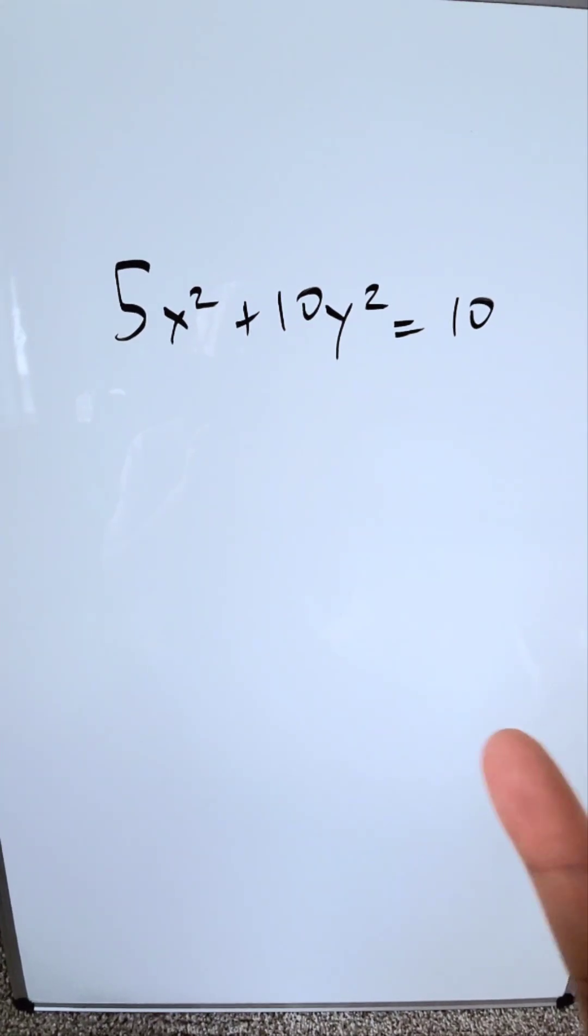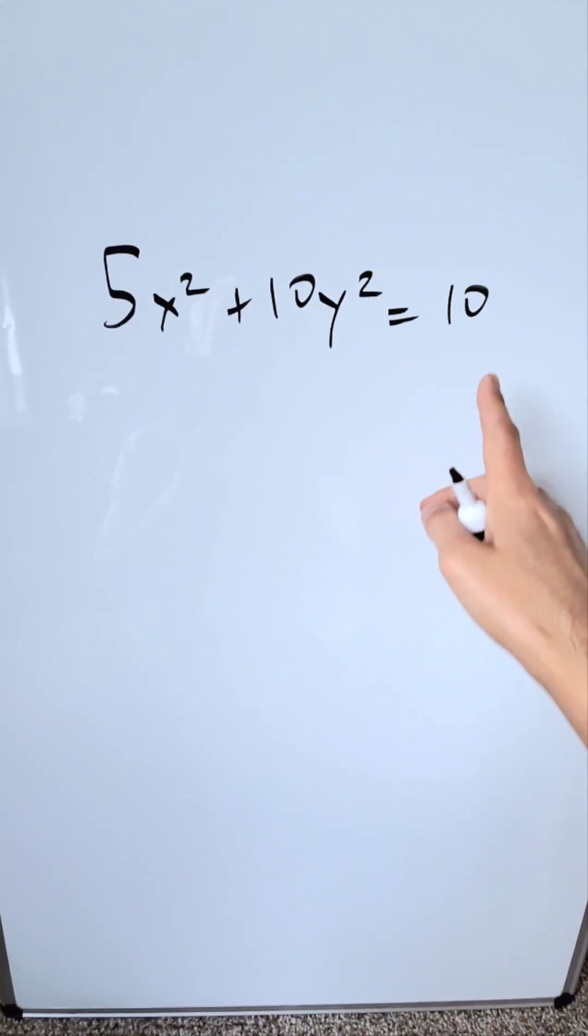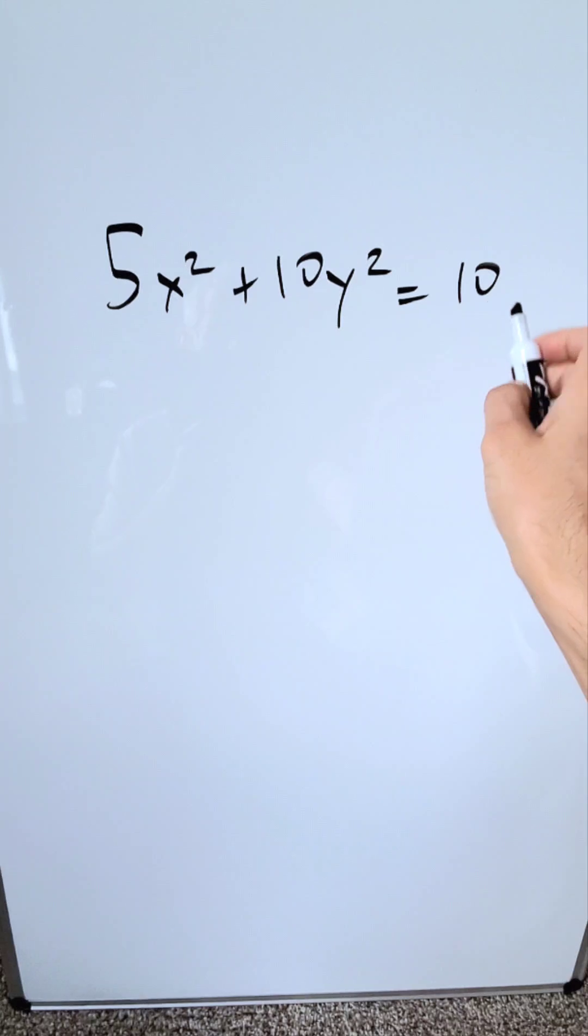We will be analyzing this in this video: 5x square plus 10y square equals 10. What does all of this mean?